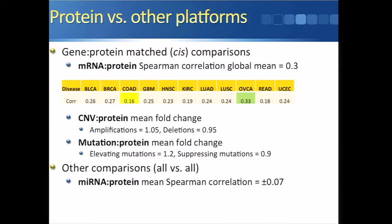Other comparisons we made were between microRNA and protein. Every microRNA versus every protein mean Spearman correlation was on the order of plus or minus 0.07. And protein versus protein mean Spearman correlation was on the order of plus or minus 0.15.